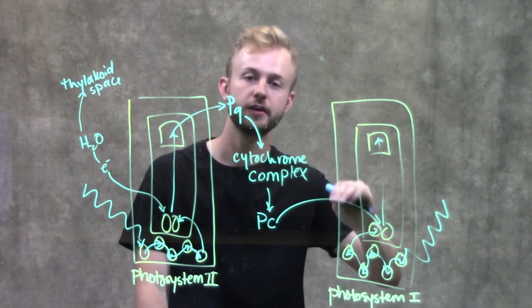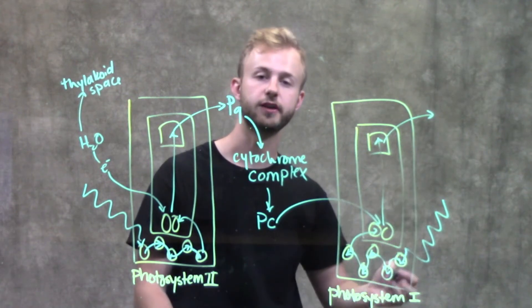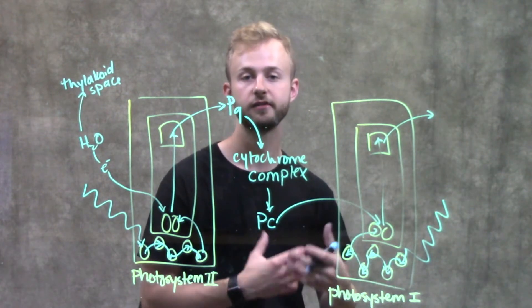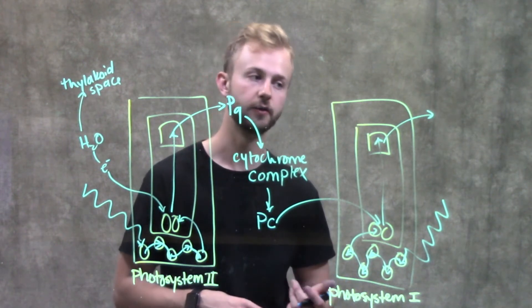Now the excited electron in the primary electron acceptor is passed to another electron transport chain. But this chain doesn't pump any protons, so it doesn't contribute to the proton gradient or ATP formation.